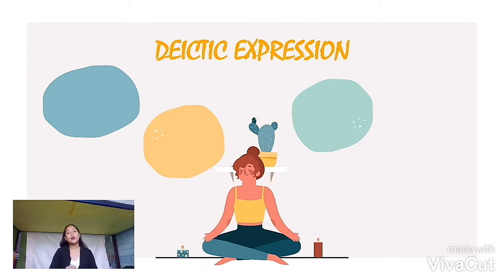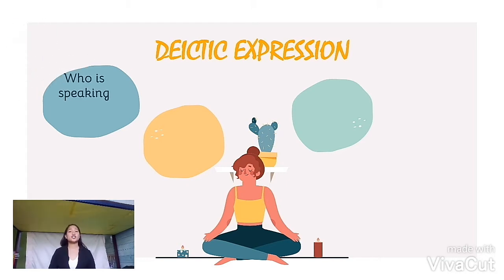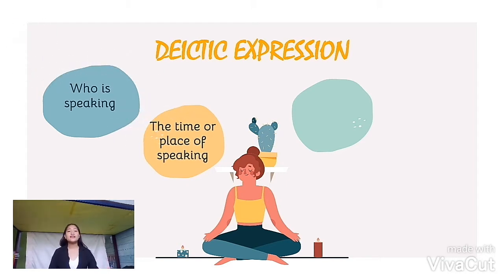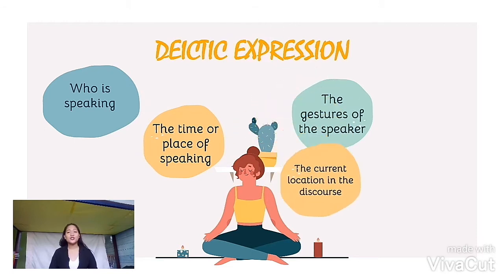The linguistic forms we use to accomplish this pointing is called diactic expression. Dyactic expression, or dyxis, is a word or phrase that points to the time, place, or situation in which a speaker is speaking. Dyxis concerns on the interpretation of adherences such as who is speaking, the time or place of speaking, and the gestures of the speaker.